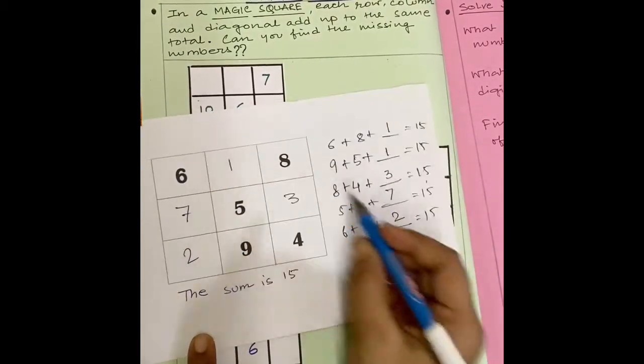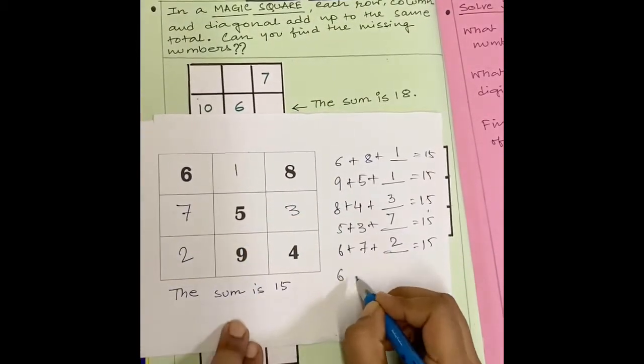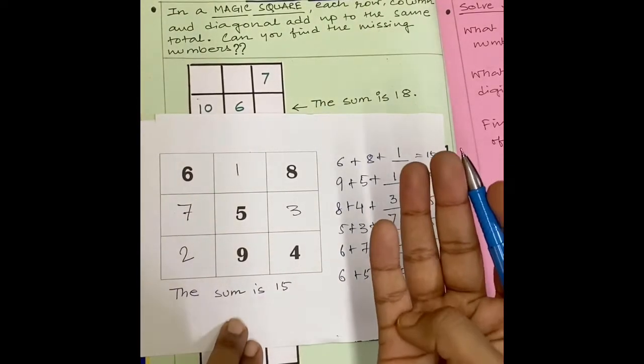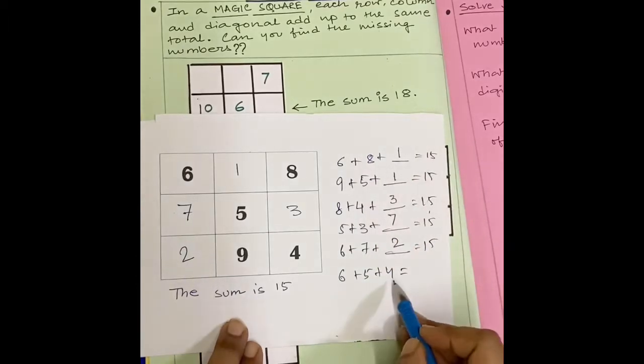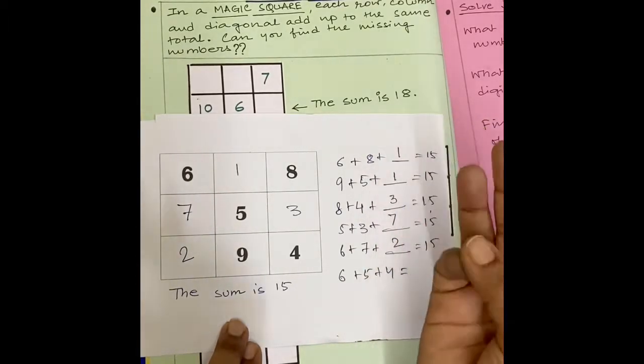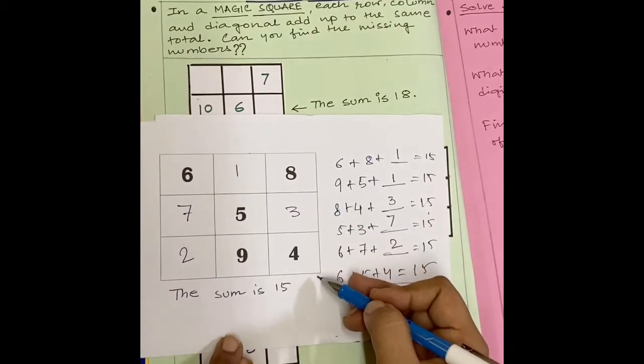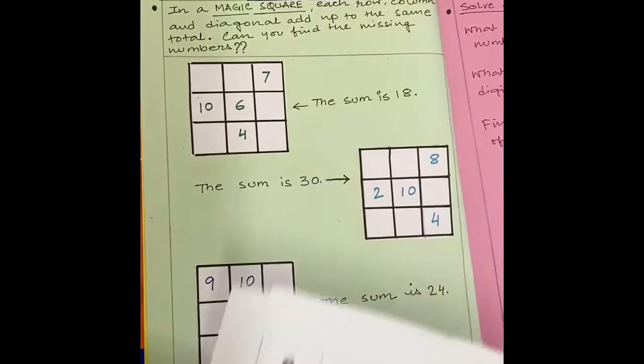If you add like this, that is, diagonally, 6 plus 5 plus 4. 6 plus 5, 6, 7, 8, 9, 10, 11, 11 plus 4, 12, 13, 14, 15. It will also make 15. So, this statement is also correct. Like this way, you have to solve this 3 squares.